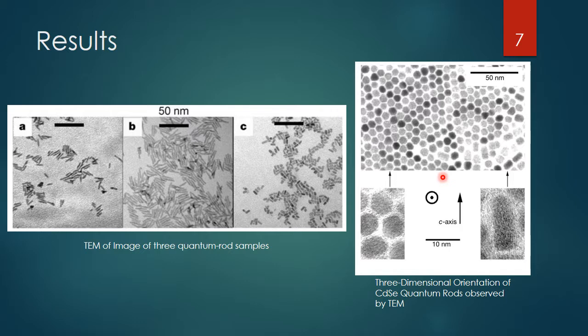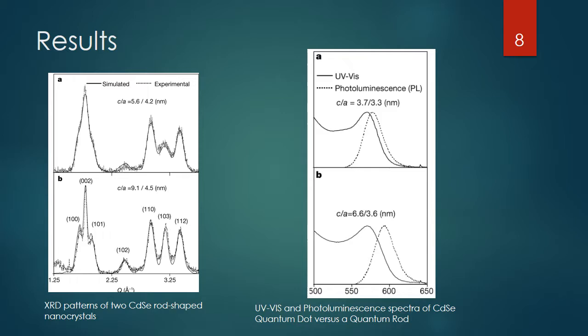Looking down the C-axis lets you see the hexagonal shape that these quantum rods have — not all of them look perfectly hexagonal, but they give you the distinct shape. You can also compare the hexagon with the rod length — the difference between the radius of the hexagon on top compared with the length of the C-axis.